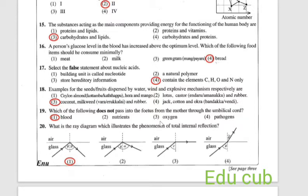Sixteenth one: a person's glucose level in blood has increased above the optimum level. Which of the following food items should be consumed minimally? Answer is fourth, bread.